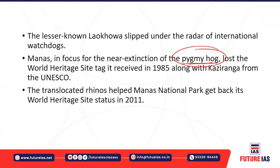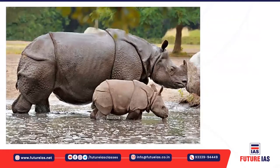Manas National Park is famous for the one-horned rhinoceros population and also for the pygmy hog, which is also near extinction. So Manas is not only focused on the one-horned rhino but also the pygmy hog. Manas National Park had already lost its World Heritage Site tag received in 1985, but the translocation of rhinos from Pabitora National Park to Manas National Park ultimately helped Manas regain its World Heritage Site status in 2011.